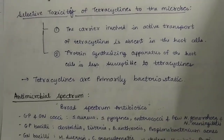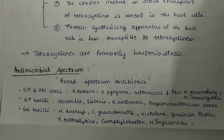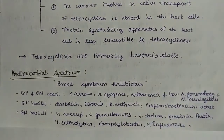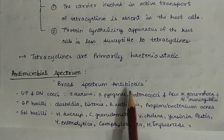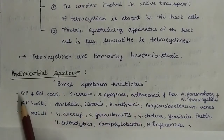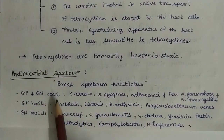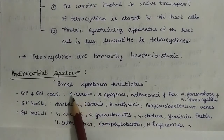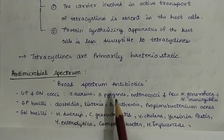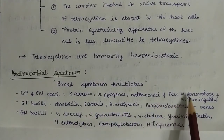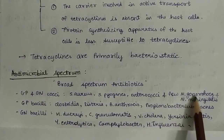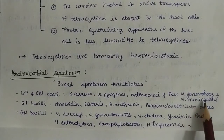Next, the antimicrobial spectrum. They are broad spectrum antibiotics. First, gram-positive and gram-negative cocci such as Staph aureus, Staph pyogenes, enterococci, and few Neisseria — gonorrhoeae and meningitidis organisms.